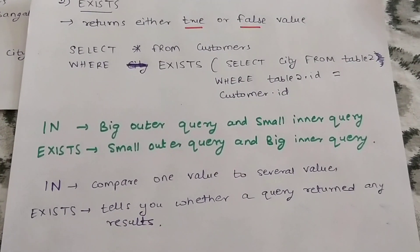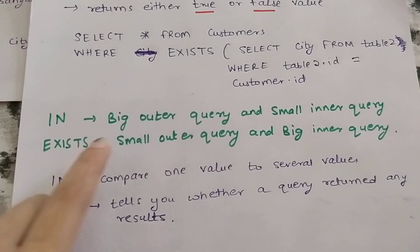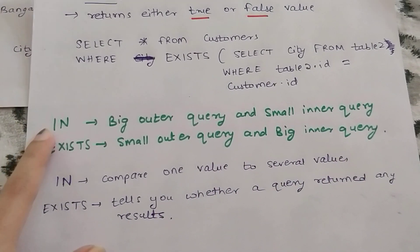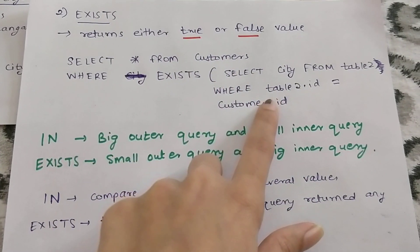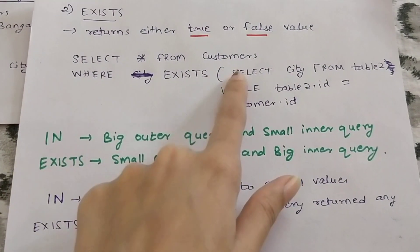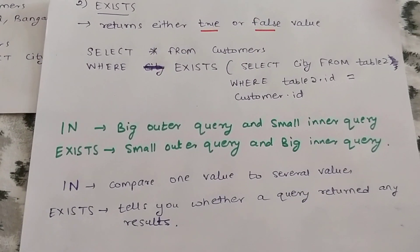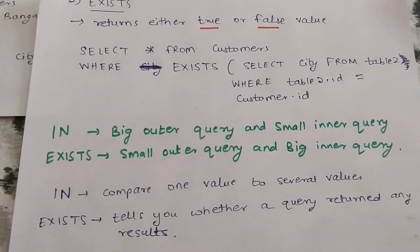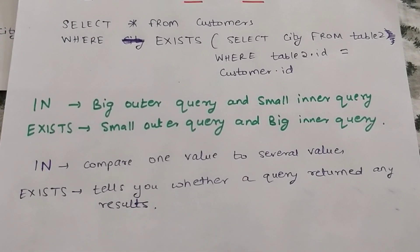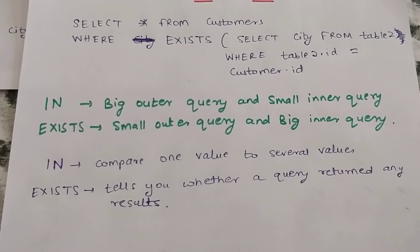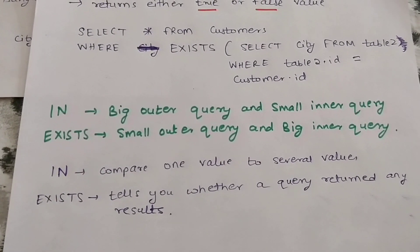There is a thumb rule for when to use IN versus EXISTS. Use IN when you have a bigger outer query and a smaller inner query — that is, a smaller subquery table. Use EXISTS when you have a smaller outer query and a bigger inner query. In summary, IN compares one value to several values, and EXISTS tells you whether a query returns any results — it returns either true or false.